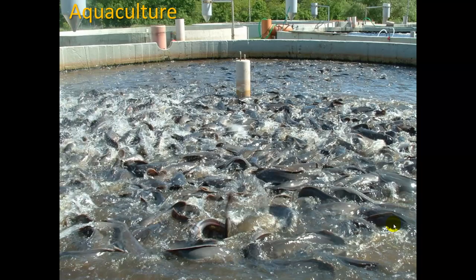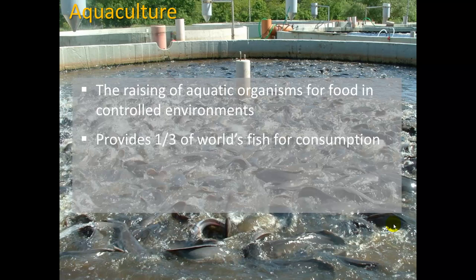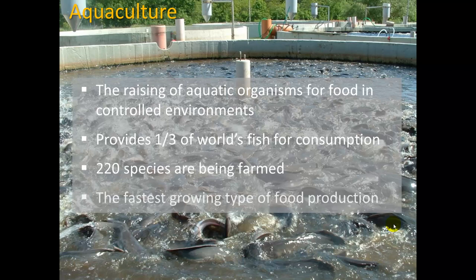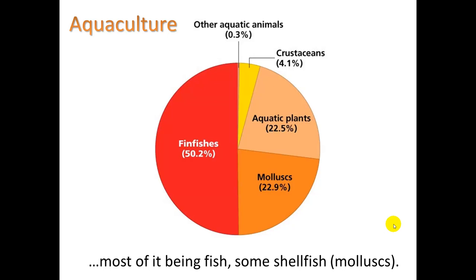We have some other choices. Besides eating feedlot-raised animals, we can do what's called aquaculture, which is the raising of aquatic organisms for food in controlled environments. It currently provides one third of the world's fish for consumption. 220 species are currently being farmed, and this is the fastest growing type of food production. It's risen quickly since just the mid-80s, doubling about every seven years. Most of it is fish, some shellfish like mollusks, and some seaweed and aquatic plants.